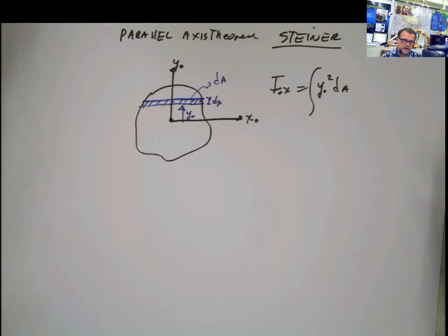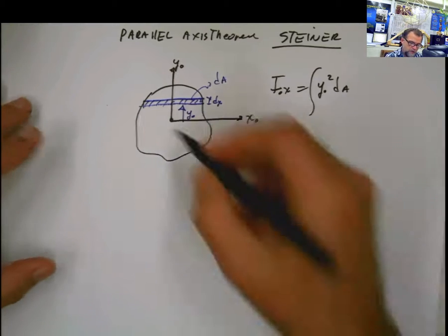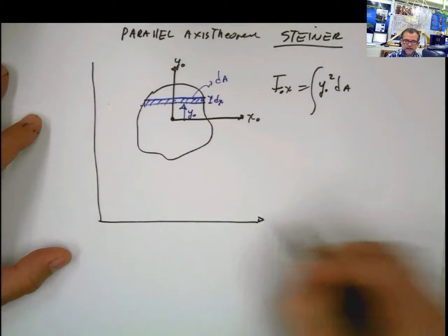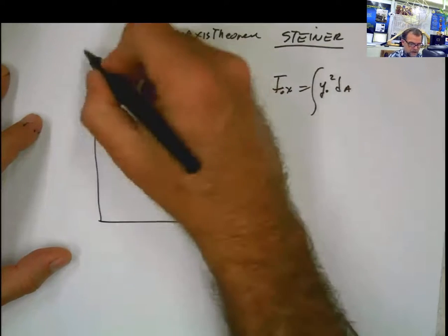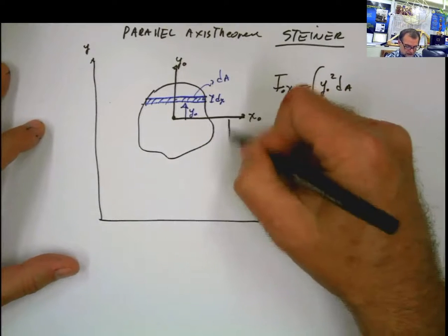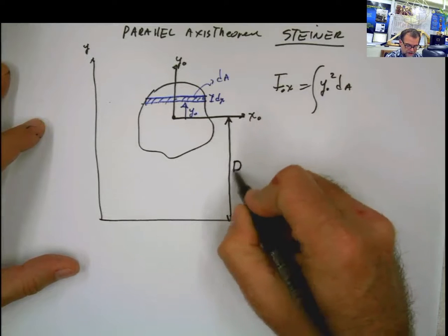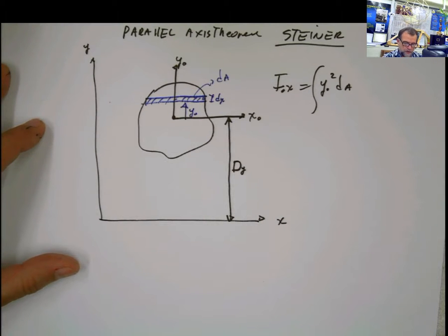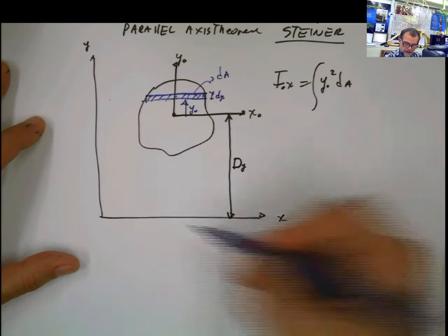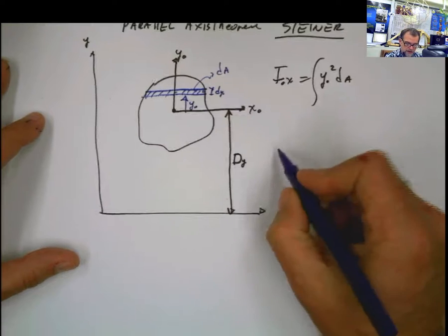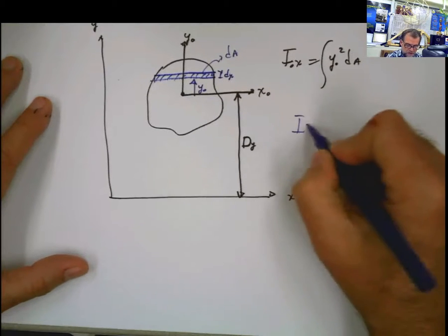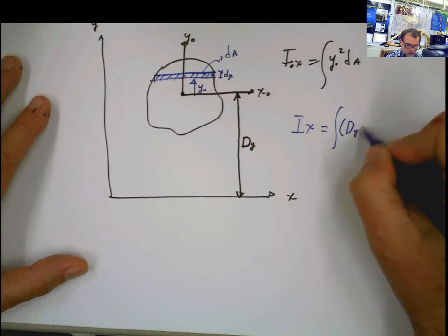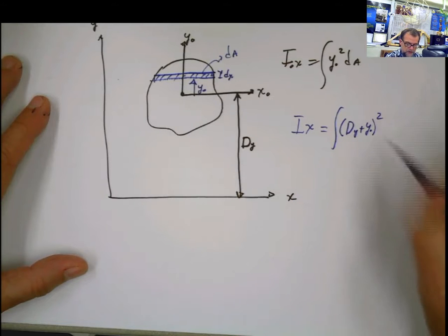But what if we want to refer that moment of inertia not with respect to that set of axes, but with respect to another set of axes that passes somewhere here — let's say x and y. This axis is separated from that axis by a distance. I'm going to call it d, measured in the y direction. The moment of inertia with respect to this new axis — I'm going to measure my distance from here to there. So basically, the moment of inertia with respect to the x-axis is going to be the integral of this distance, which is d measuring y plus the other y that I have here, squared, times dA.